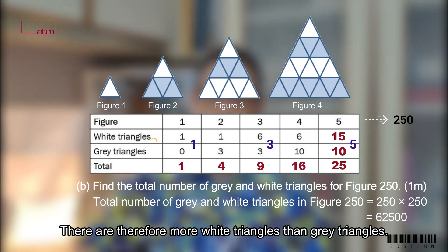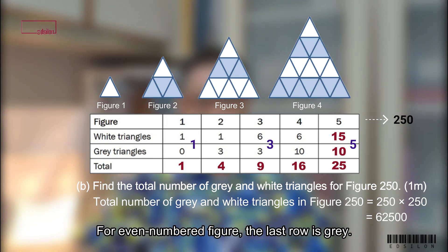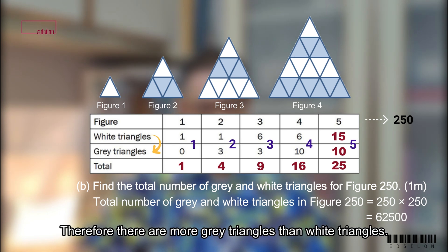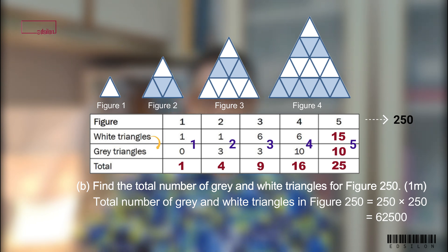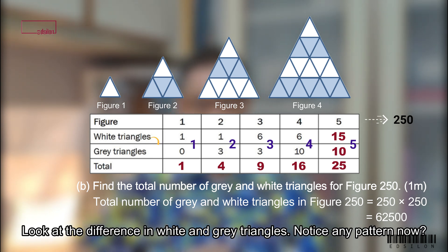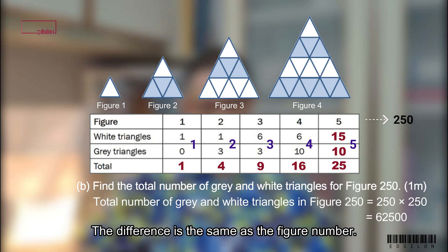For even numbered figure, the last row is grey. Therefore, there are more grey triangles than white triangles. Look at the difference in white and grey triangles. Notice any pattern now? The difference is the same as the figure number.